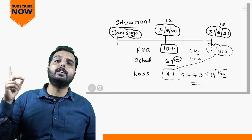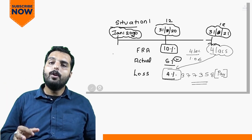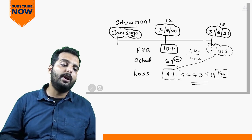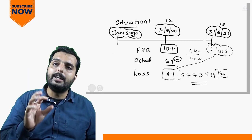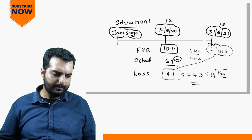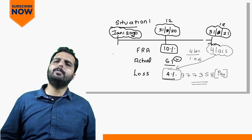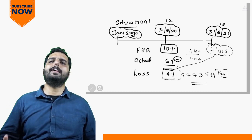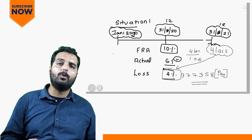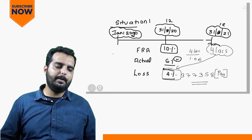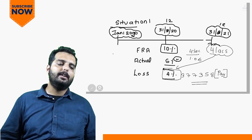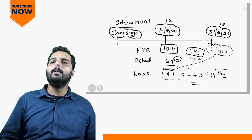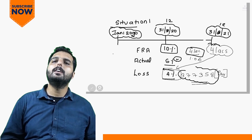My loss is 4 lakhs on 31st December 2021, but I get information about this loss on 31st December 2020. So rather than waiting for one year to pay this money, I will pay it now. I won't pay 4 lakhs — I will pay the present value of 4 lakhs at a discount factor of 6%, which turns out to be 3 lakh 77,358. This is what we call the settlement amount.